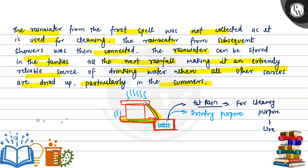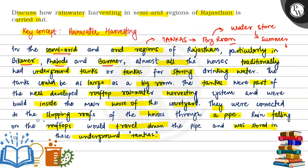And this is how rainwater harvesting in the semi-arid regions of Rajasthan is carried out. I hope you understood well. Best of luck.